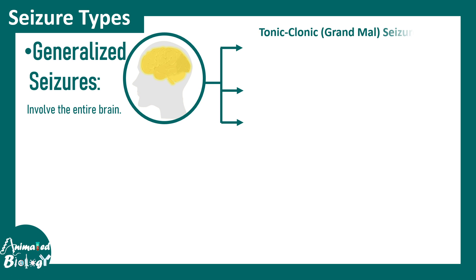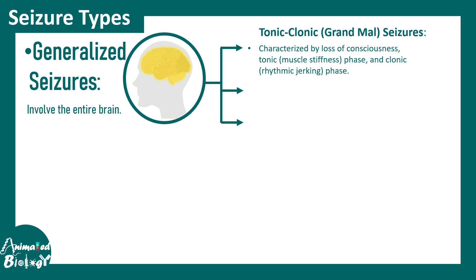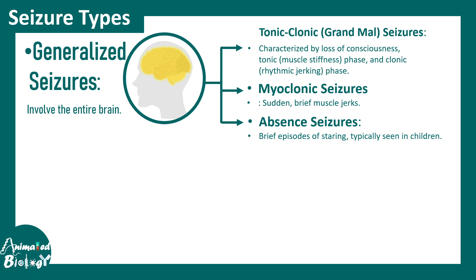In generalized seizures there is a category known as tonic-clonic seizures, which involves loss of consciousness — tonic means muscle stiffness and clonic means rhythmic jerking. There are also myoclonic seizures, which involve sudden brief muscle jerks. Absence seizures are brief periods of seizure activity that can be difficult to diagnose — they are somewhat cryptic and are common in children.